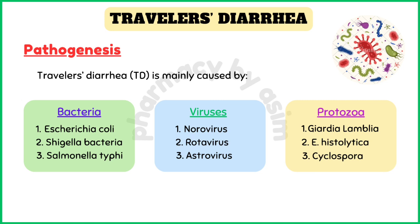Giardia is the main protozoal pathogen found in traveler's diarrhea. Entamoeba histolytica is a relatively uncommon cause of traveler's diarrhea. The risk for Cyclospora is highly geographic and seasonal; the most well-known risks are in Nepal, Peru, Haiti, and Guatemala.